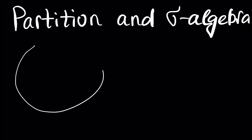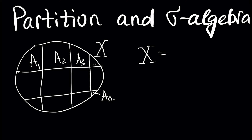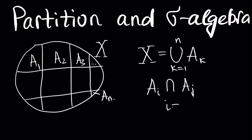Assume we have a set X and this set is divided into some number of parts: a1, a2, a3, and so on, with the last part being an. So our set X can be represented as a union of ak for all k from 1 to n. And each of these subsets ai and ag, where i is not equal to g, have empty intersection.